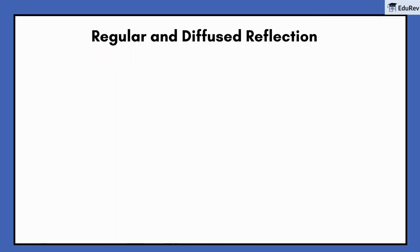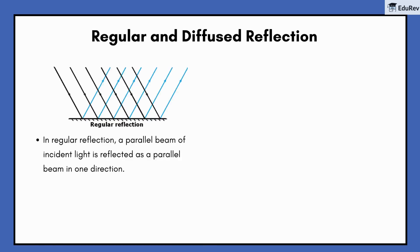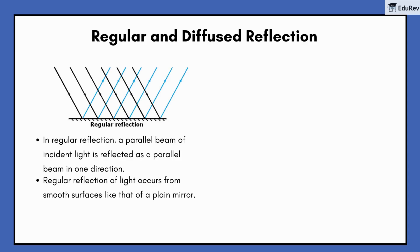Reflection can be of two types: regular and diffused. In regular reflection, a parallel beam of incident light is reflected as a parallel beam in one direction. Regular reflection occurs from smooth surfaces like that of a plane mirror, and images are formed by regular reflection of light.